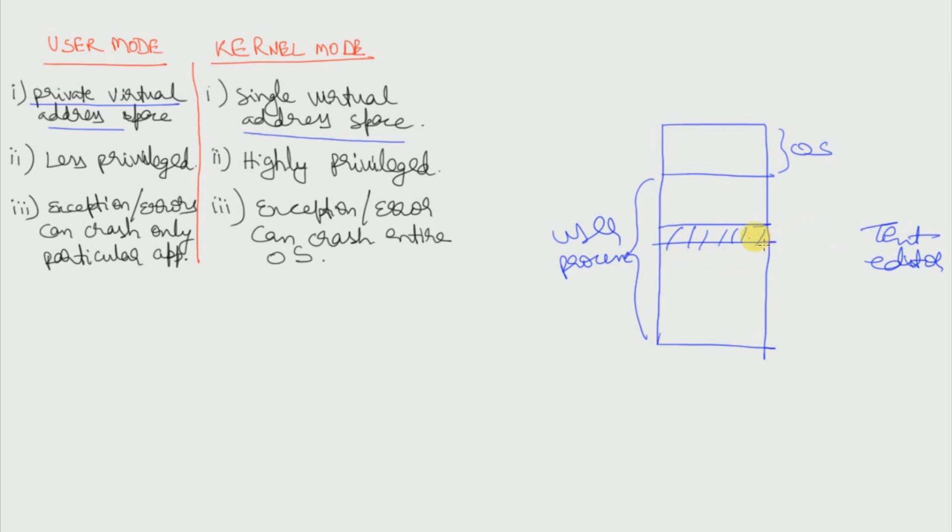Now this is the virtual address space of this text editor. And if suppose some other process is also running in this user space, then this cannot access any part of this process, and this also cannot access the operating system space. So this user process is restricted to its own area, and so we say that a user mode process has a private virtual address space.